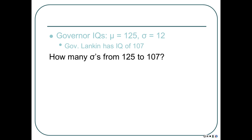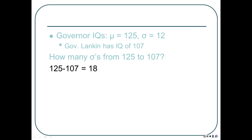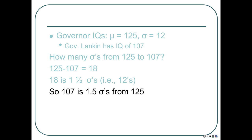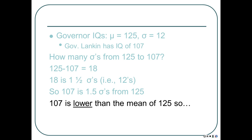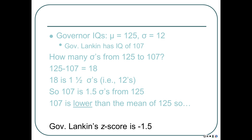Governor Lincoln's IQ is 107. That is 18 points away from the mean of 125. And 18 is one and a half twelves — 12 goes into 18 one and a half times. So 107 is 1.5 standard deviations away from the mean. Since 107 is lower than 125, it gets a negative value. Governor Lincoln's z-score is negative 1.5.